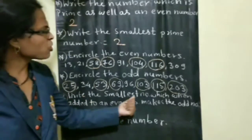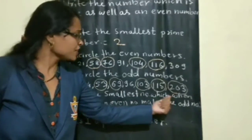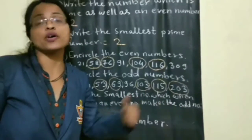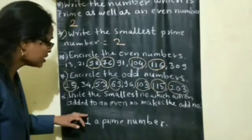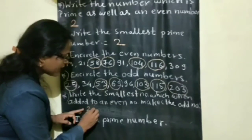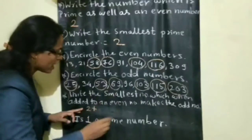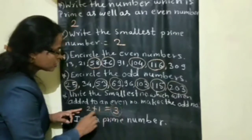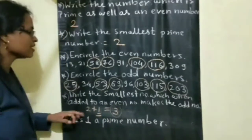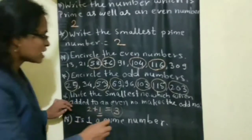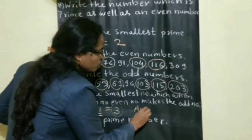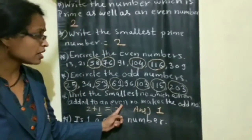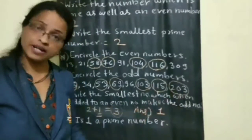Next question: write the smallest number which, when added to an even number, makes an odd number. The smallest even number is 2. If we add 1 to it, we get an odd number. So the smallest number we can add is 1. The answer is 1. If we add 1 to any even number, we get an odd number.